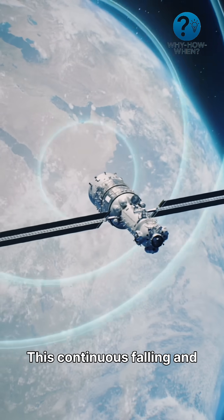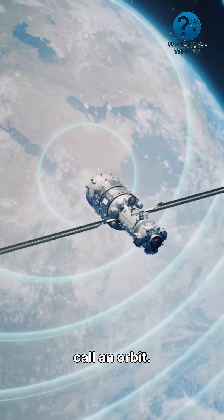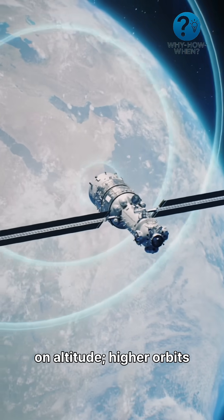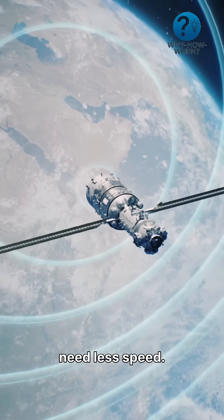This continuous falling and missing creates what we call an orbit. The exact speed depends on altitude. Higher orbits need less speed.